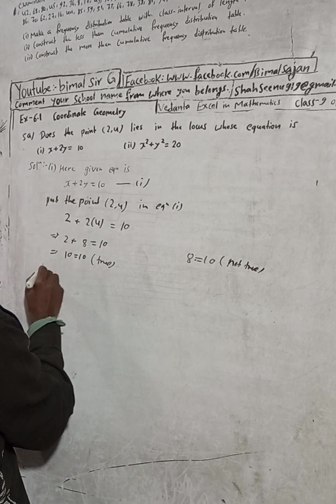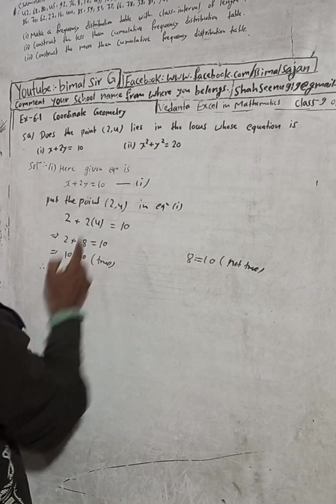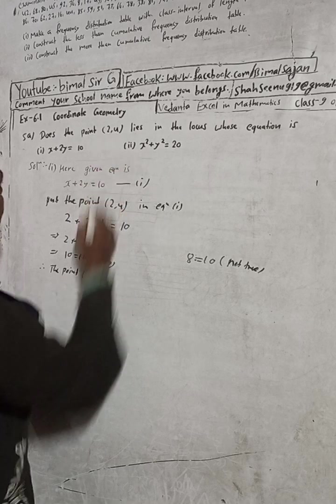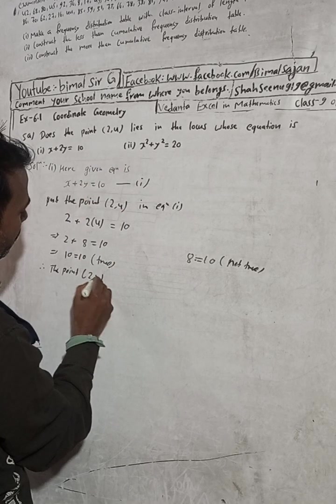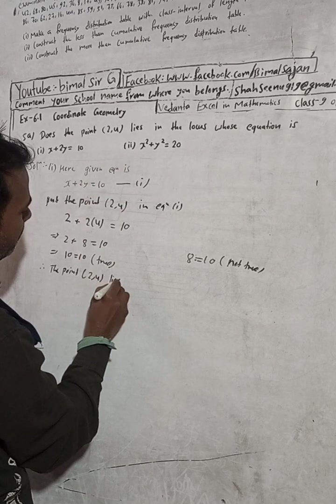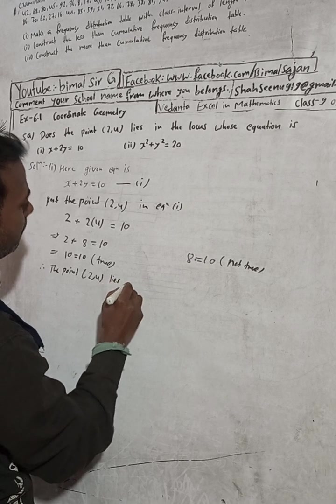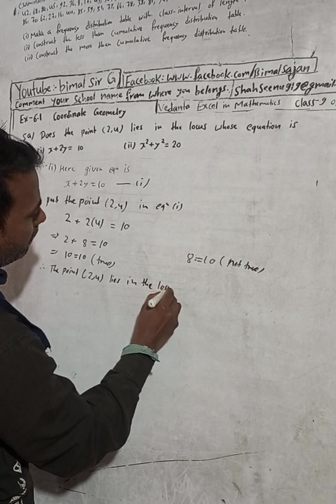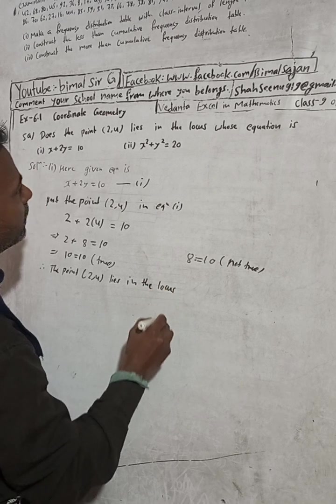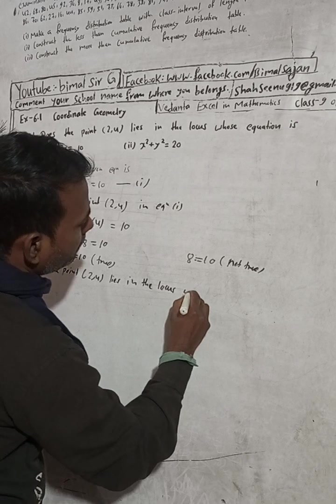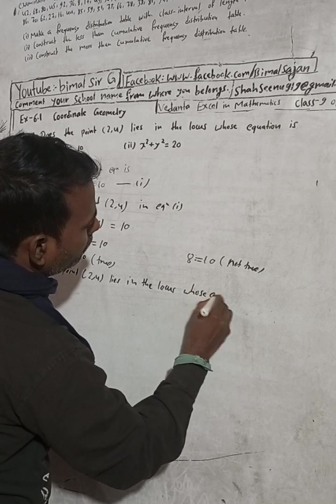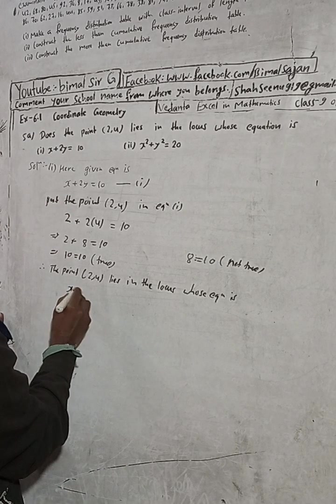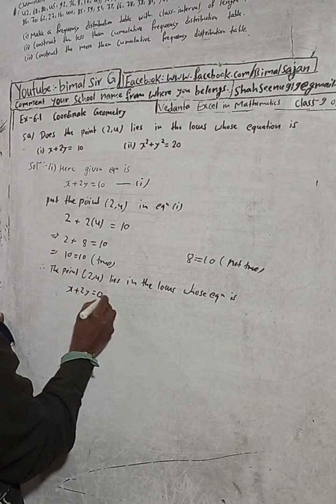Therefore, the point (2,4) lies in the locus whose equation is x + 2y = 10. Okay, this is number one.